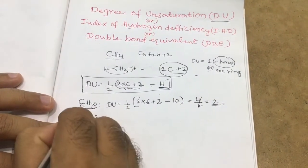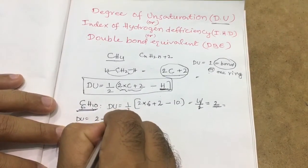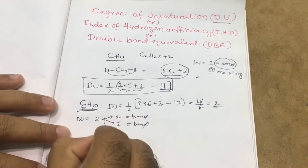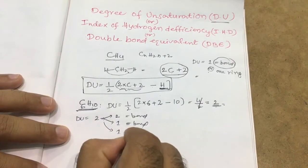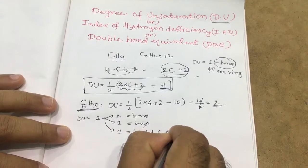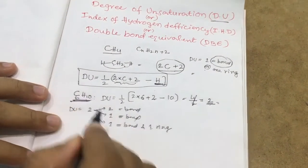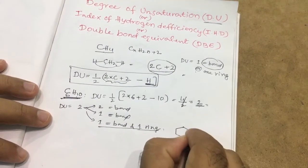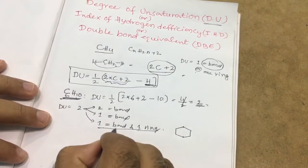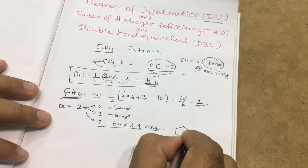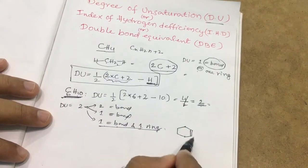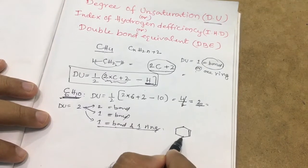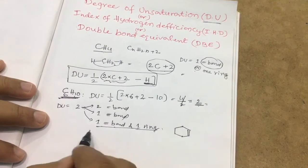2 degrees of unsaturation could be 2 double bonds plus 1 ring. For example, with 6 carbons and 1 double bond plus 1 ring — placing the double bond anywhere in the ring — gives 4×2=8 hydrogens at CH2 groups plus 2 more, totaling 10 hydrogens. This satisfies the formula C6H10.